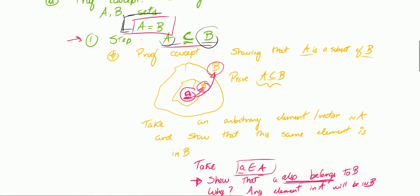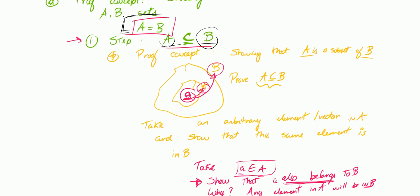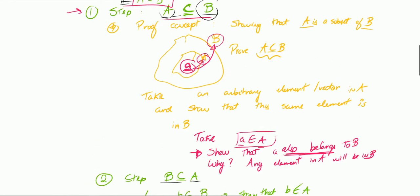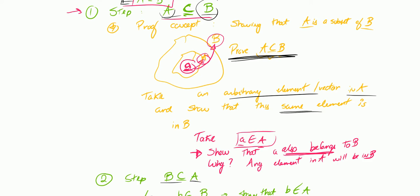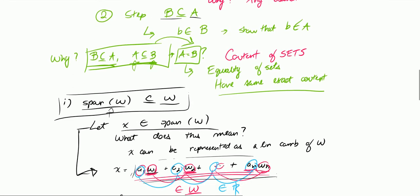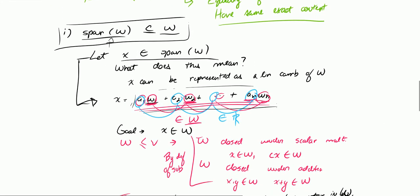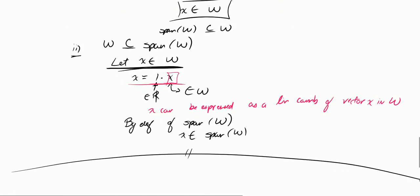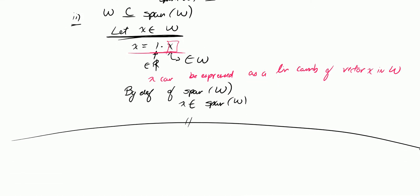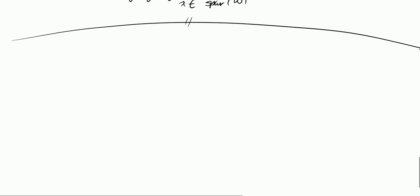To show that A is a subset of B, you need to take an arbitrary element in A and show that the same element is in B. So I showed that span of W is a subset of W and that W is a subset of span of W. That's the first part of my proof.